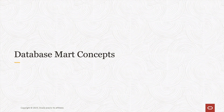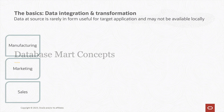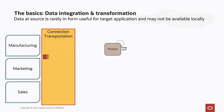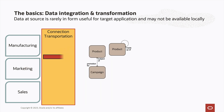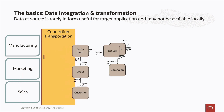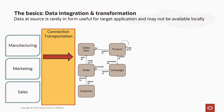Let's review some basic data mart concepts. Many of you will be familiar with this, but I think it makes sense to level set. Data at source is rarely in a form useful for analytics, and it may not be available locally. For example, the manufacturing system may be the source for the product master. But we need more than that — information about various campaigns to promote these products comes from the marketing system, and details of individual orders, and perhaps the campaigns associated with those orders, comes from the sales system. The full picture only becomes clear from the collection of these various fragments of data, and even then it's probably not in the right form for analytics.